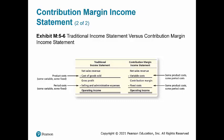In the traditional income statement, we begin with net sales revenue and subtract cost of goods sold, which represents all product costs — some variable and some fixed. After subtracting cost of goods sold from net sales revenue, we get gross profit. From gross profit, we subtract period costs like selling and administrative expenses, some of which are variable and some fixed, and we get operating income.